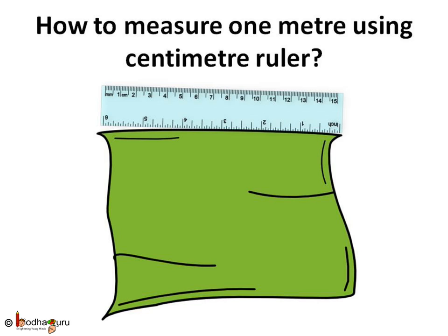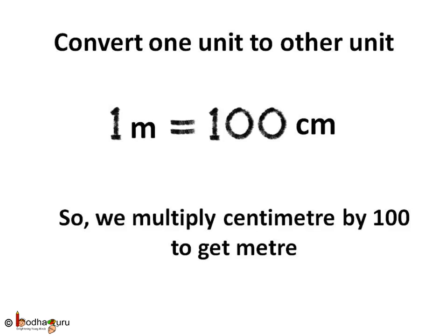If you want to buy 1 meter of cloth but the shopkeeper doesn't have a measuring rod — only a small ruler which can measure in inches and centimeters — then how will he measure 1 meter of cloth? At that time, we need to convert a given length from one unit to another. Since 1 meter equals 100 centimeter, use the ruler to measure 100 centimeters. Very simple!